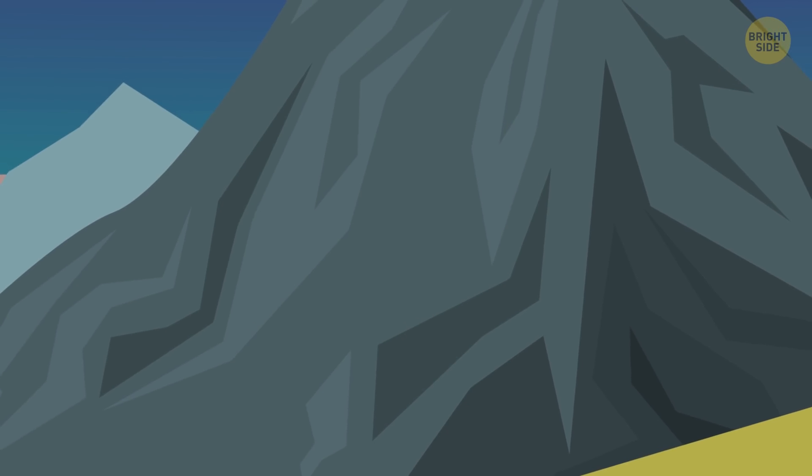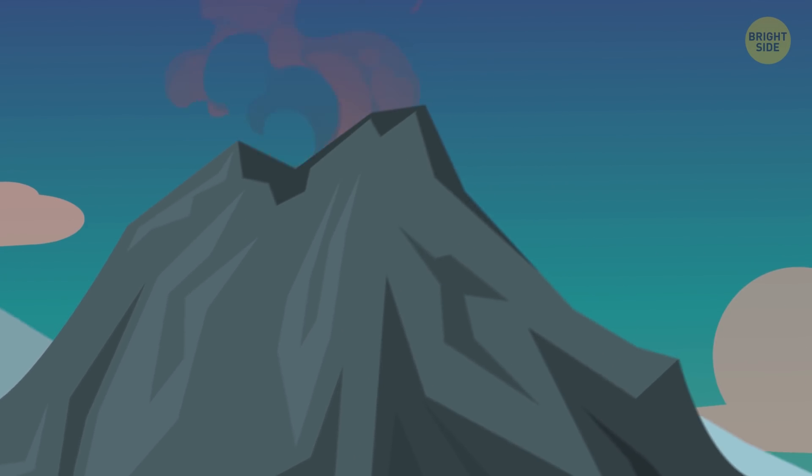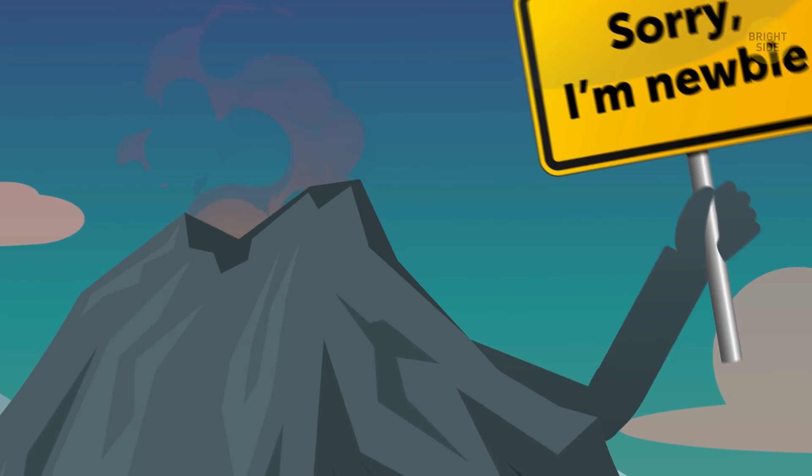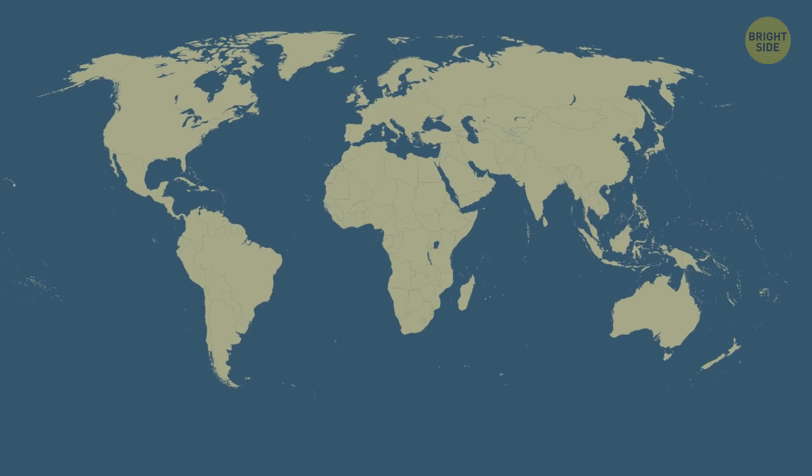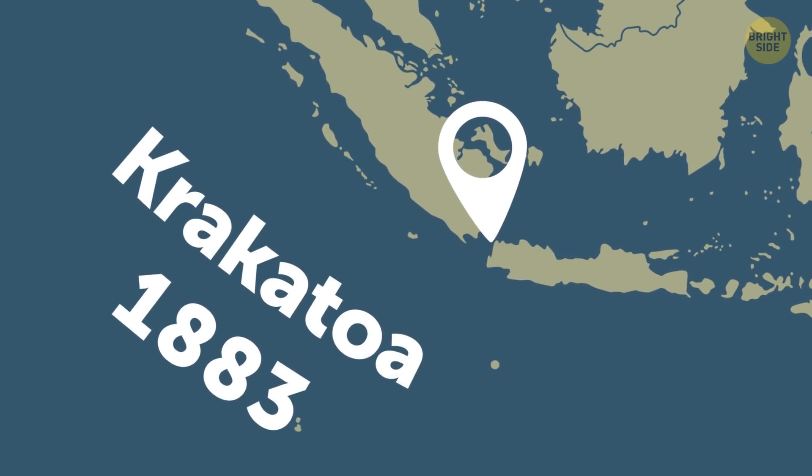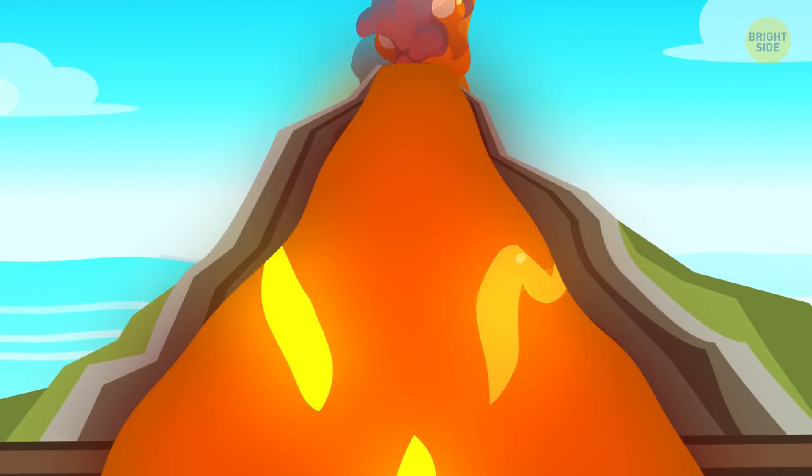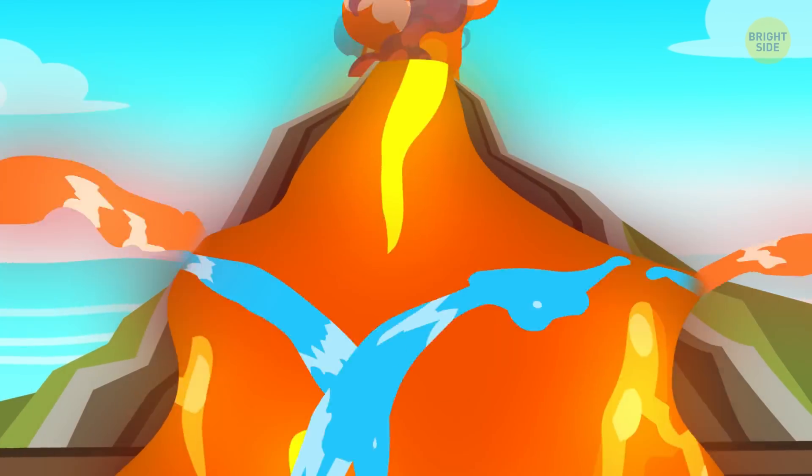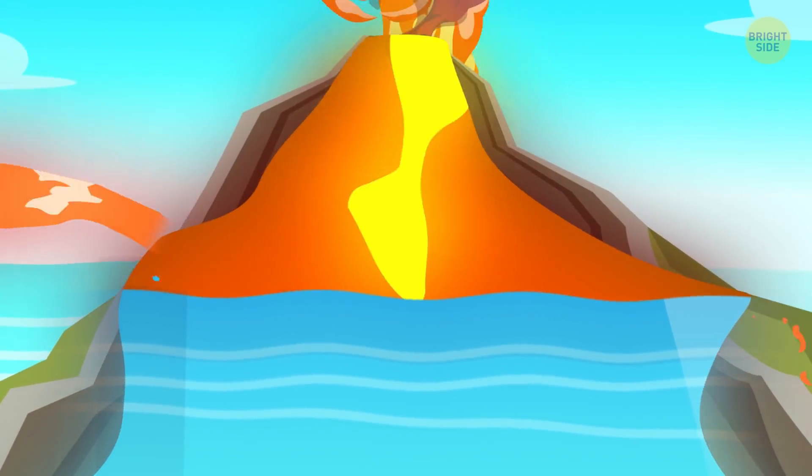There are also several so-called supervolcanoes that haven't lived up to this name yet because they've never produced anything like a supereruption. For example, in 1883, Indonesian volcano Krakatoa started to erupt. The power of it tore the volcano's walls open, and cold seawater rushed into its molten insides.